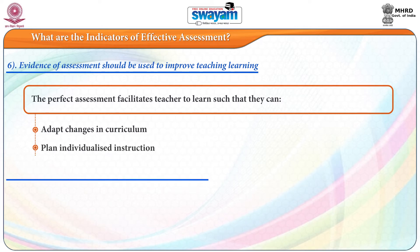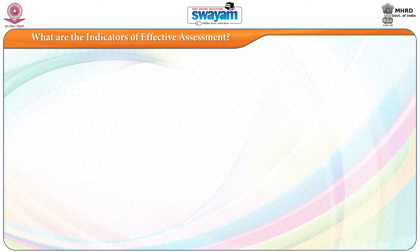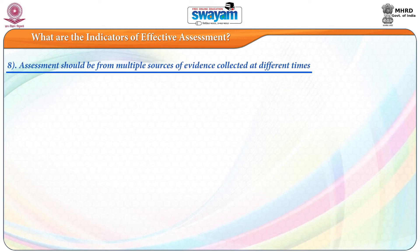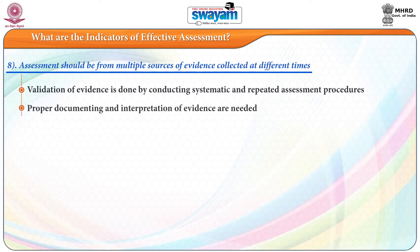The seventh indicator is that evidence of assessment should be gathered in actual situations. Assessment in real settings gives the true performance of the child, so assessment should not be experimental. The eighth indicator is that assessment should draw from multiple sources of evidence collected at different times. Validation is done through systematic and repeated assessment procedures, with proper documenting and interpretation.